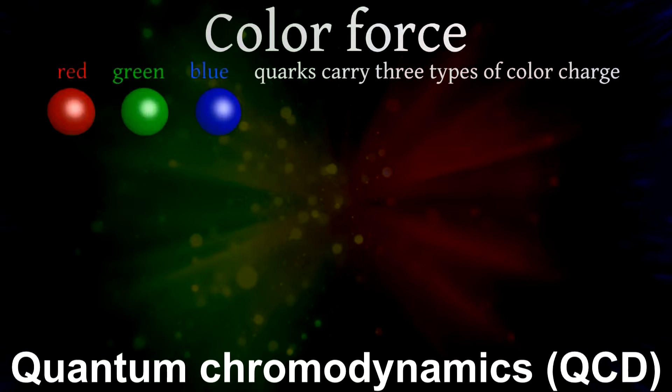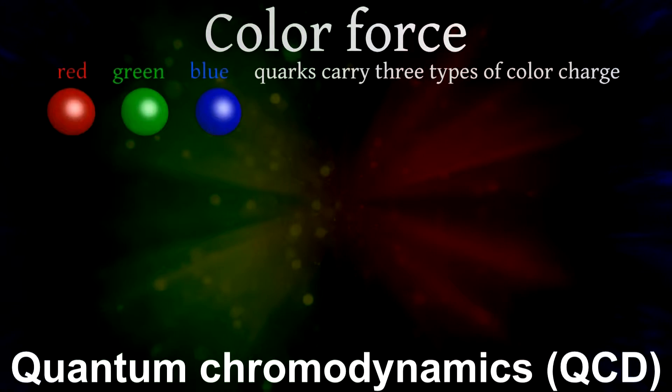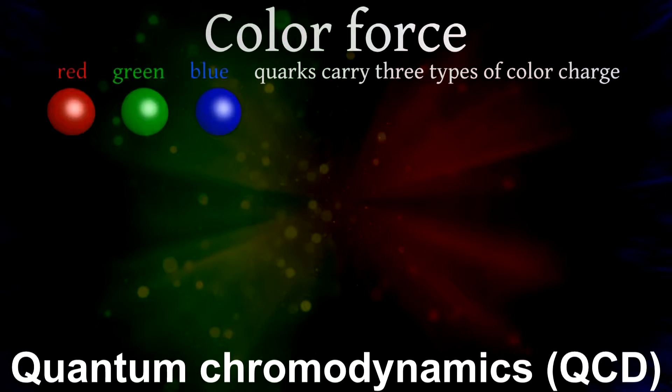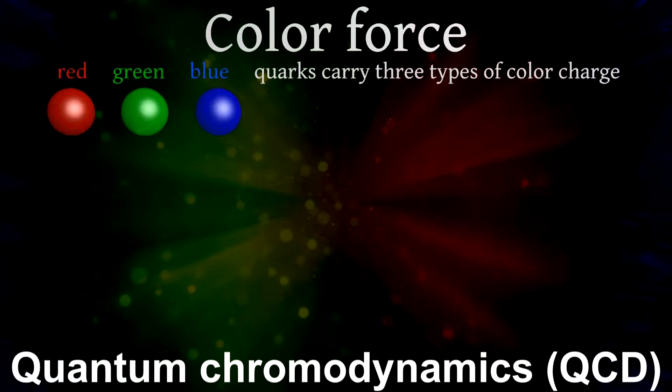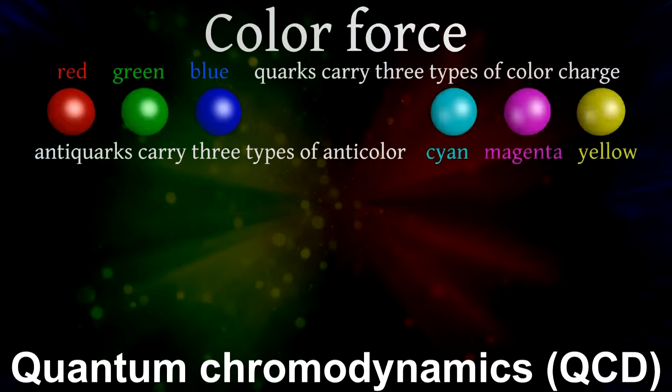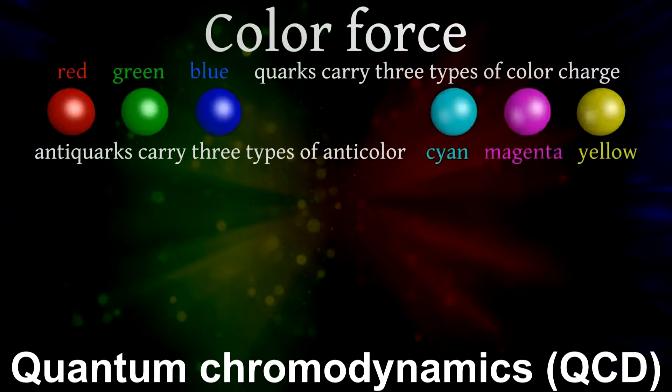In quantum chromodynamics, there are three types of colors that describe each particle: red, green, and blue. We also have to consider that particles can also have anti-colors. Anti-red or cyan, anti-green or magenta, and anti-blue or yellow.